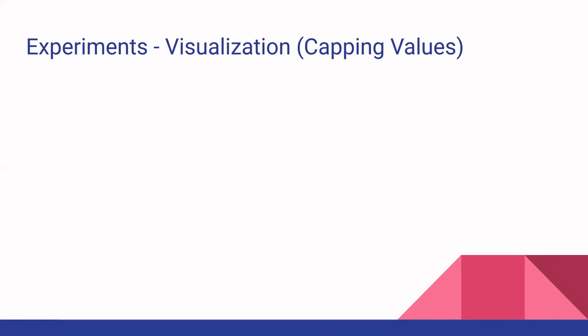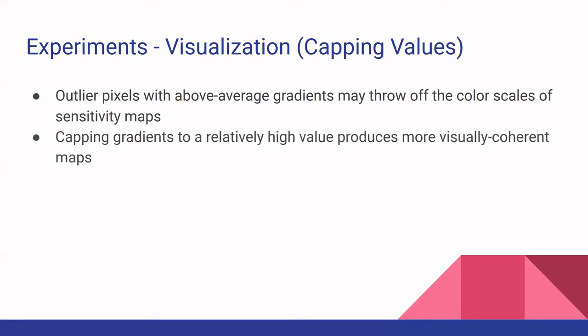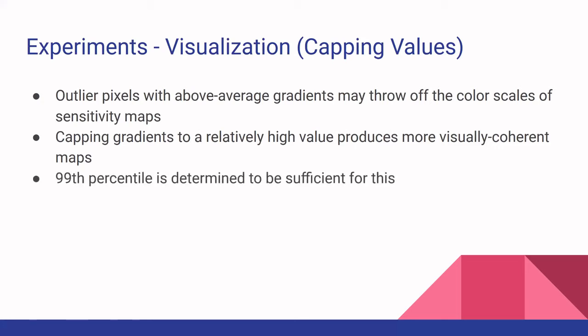A second visualization technique they used was capping values. They found that in creating their sensitivity maps, sometimes they would get outlier pixels with above-average gradients, which threw off the color scales. If they didn't cap the values, they got mostly dark images with a few highlighted outlier pixels. By capping gradients to a high value — about the 99th percentile — they were able to produce a much more coherent sensitivity map.